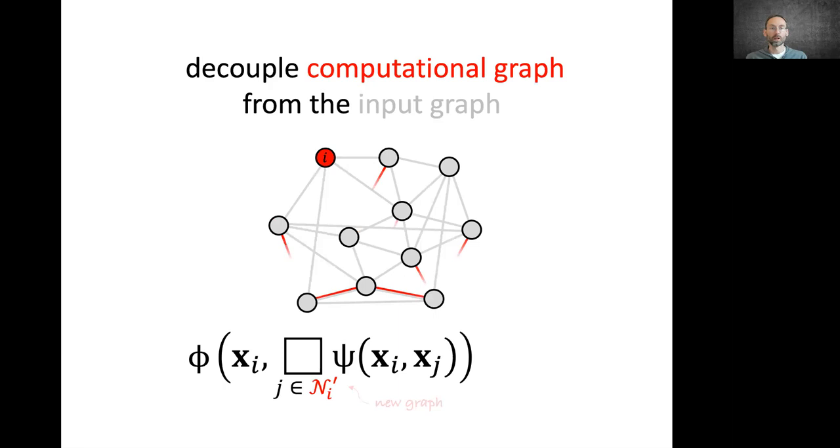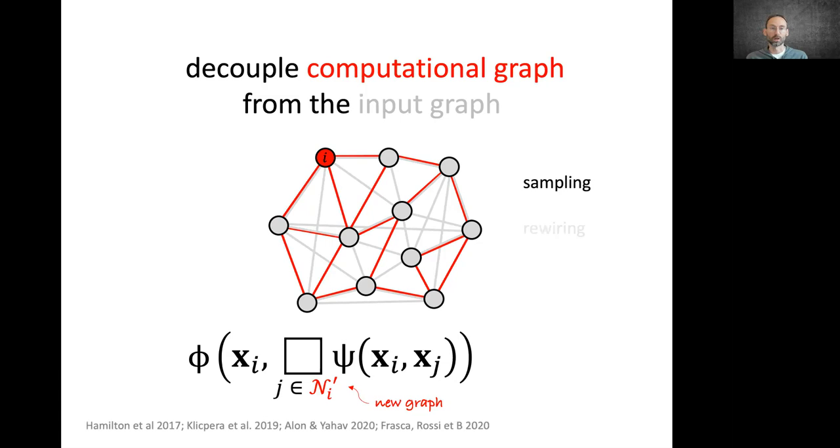Even in cases where the graph is not given as input, graph neural networks still make sense. Even when the graph is given, we don't necessarily need to stick to it in order to do the message passing. A lot of recent approaches decouple the computational graph from the input one and usually takes the form of either graph sampling or graph rewiring or using larger multi-hop filters where the aggregation is performed on neighbors of the neighbors or bigger supports.